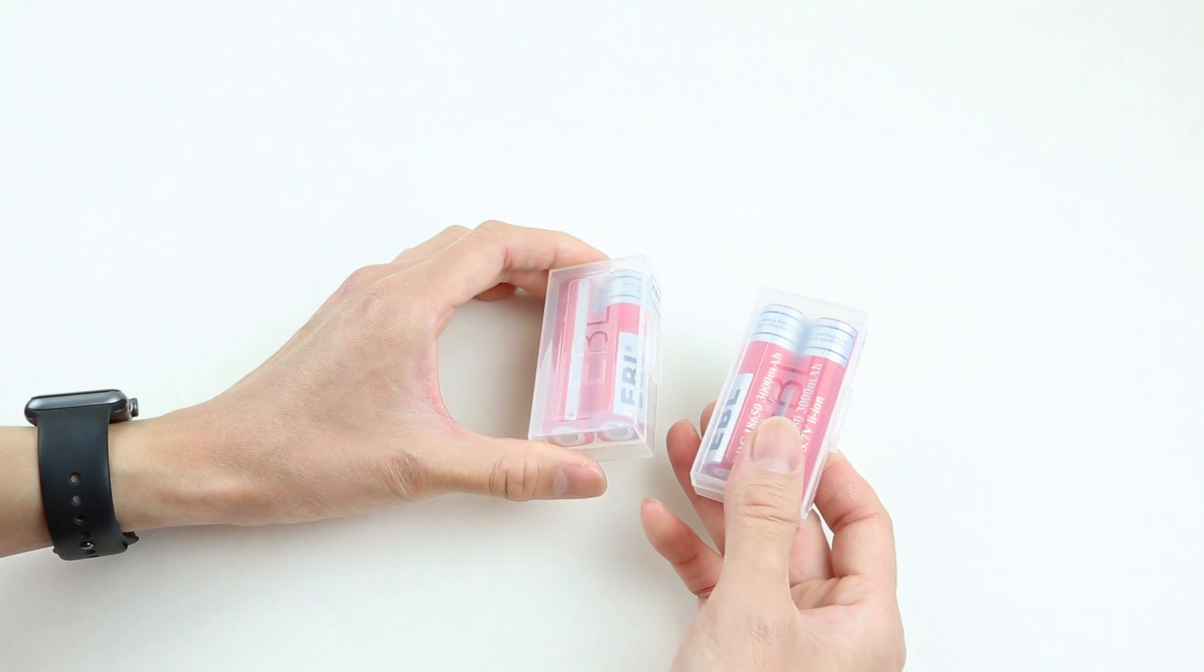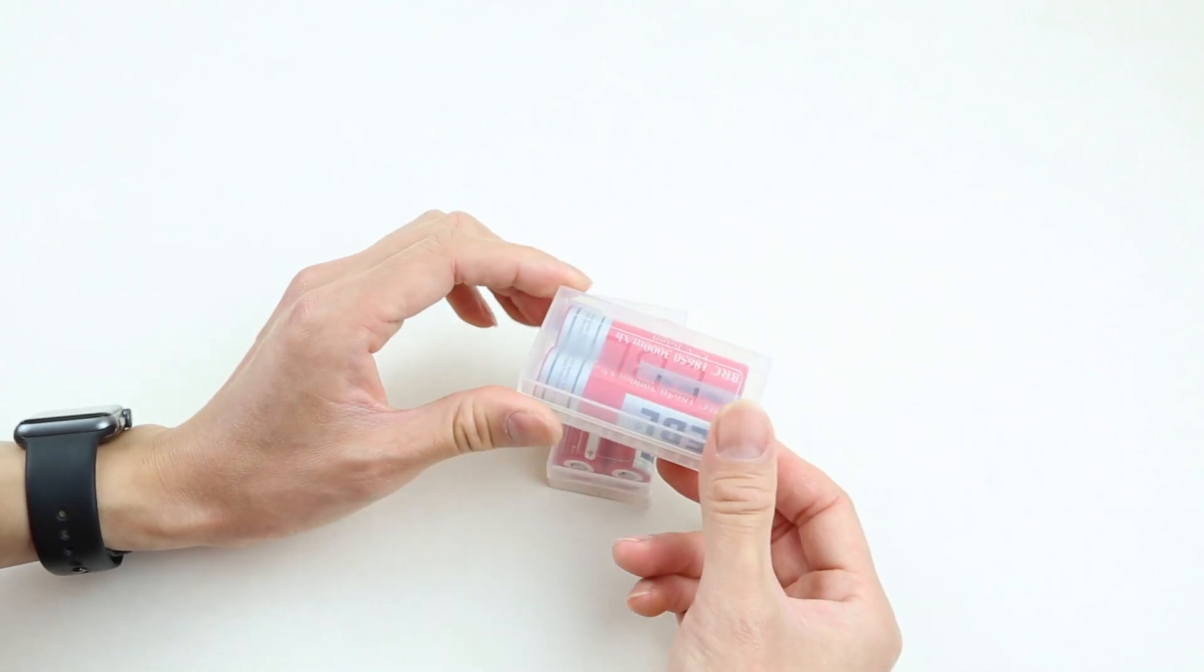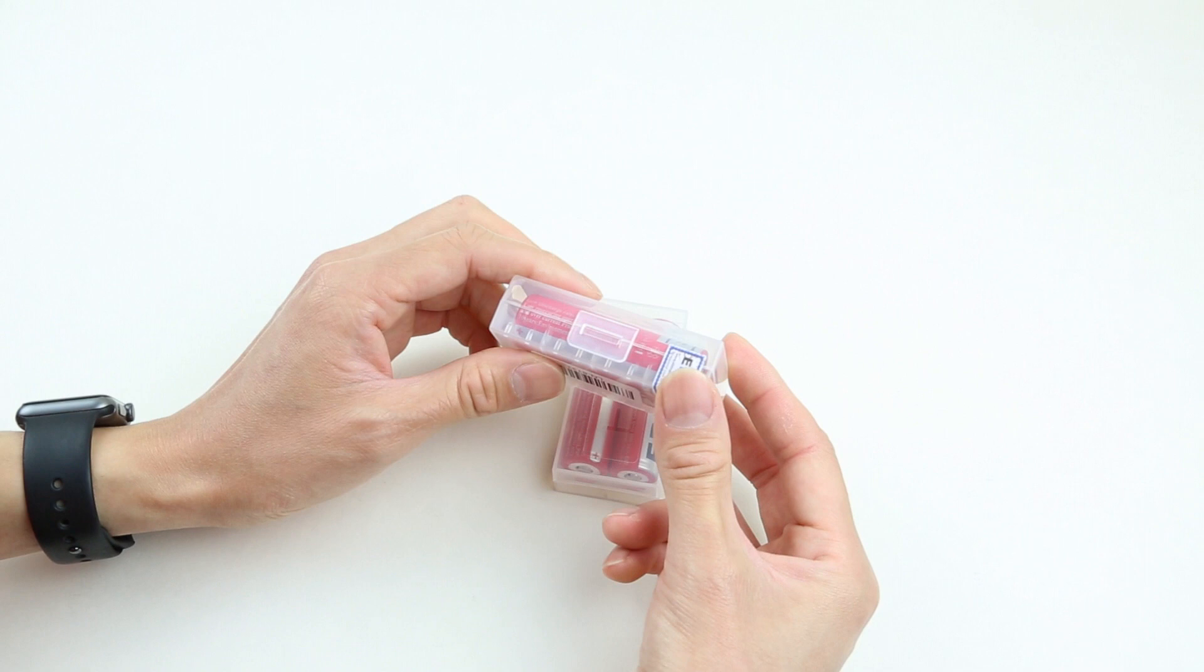As we can see, these batteries come in a pair and are stored in this plastic clear case. Also, each case has this EBL sealed label.